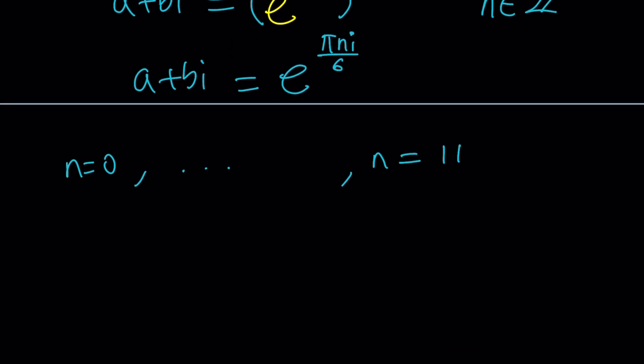If n is zero, for example, I'm going to be getting a plus bi equals e to the power zero, which is one. So one is a solution. What does that mean? It means a is one, b is zero. Easy.